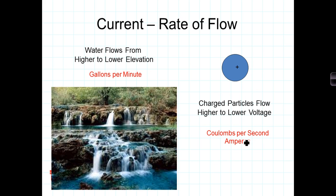When we talk about that flow, we're talking about electrical current. Current is measured in coulombs per second — another name for that is ampere, sometimes abbreviated as amps. The analogous flow of water might be measured in gallons per minute or cubic feet per second.